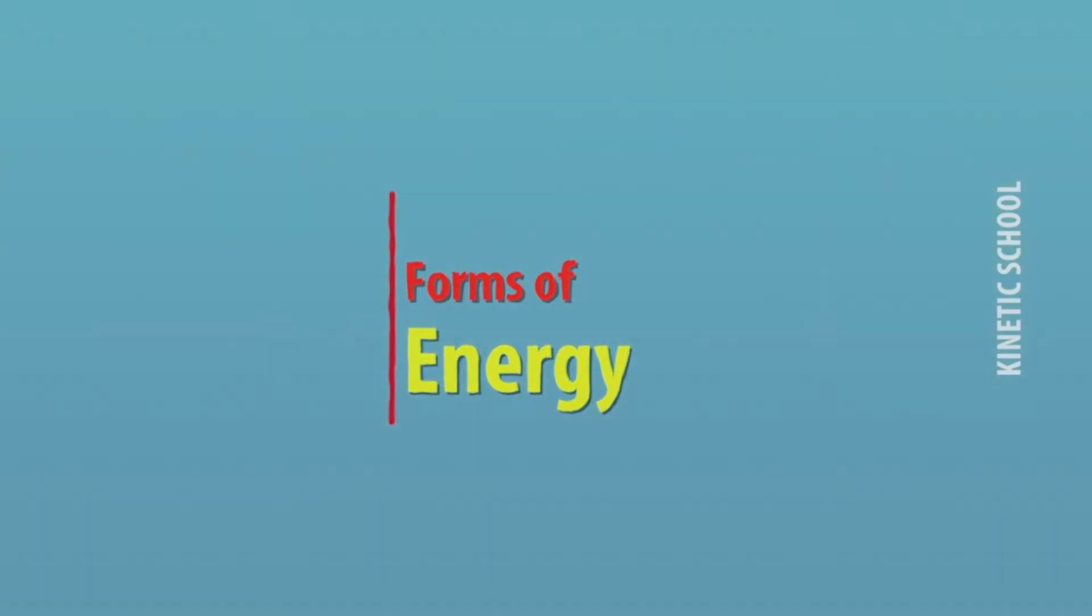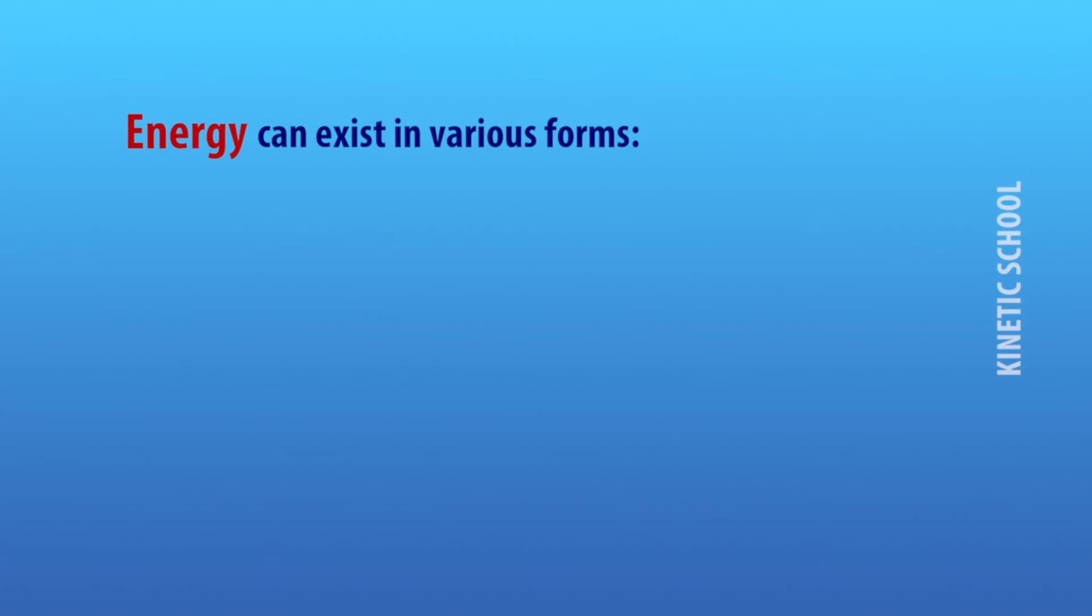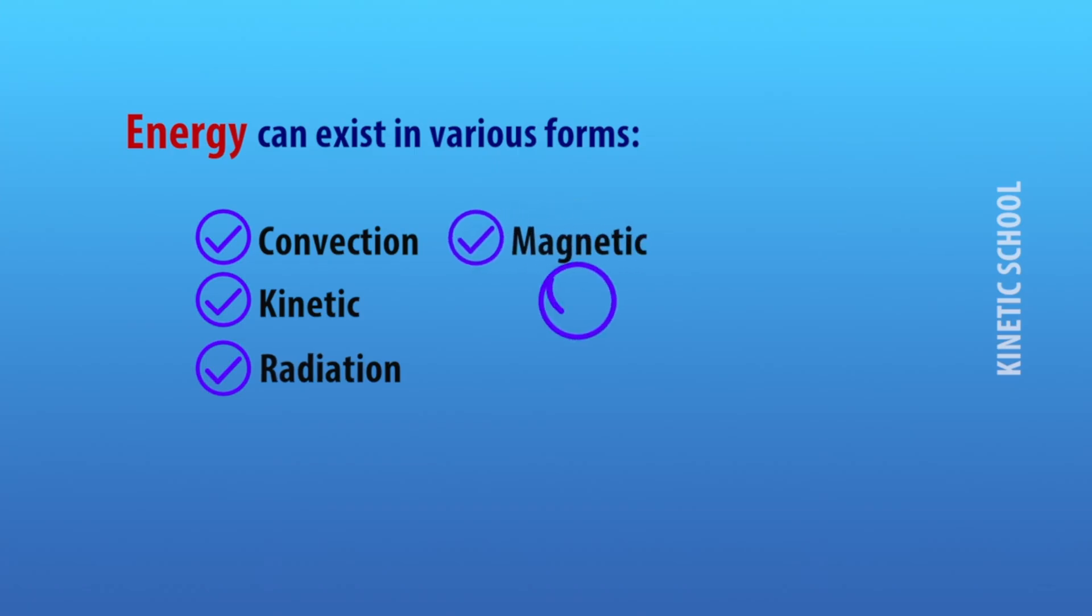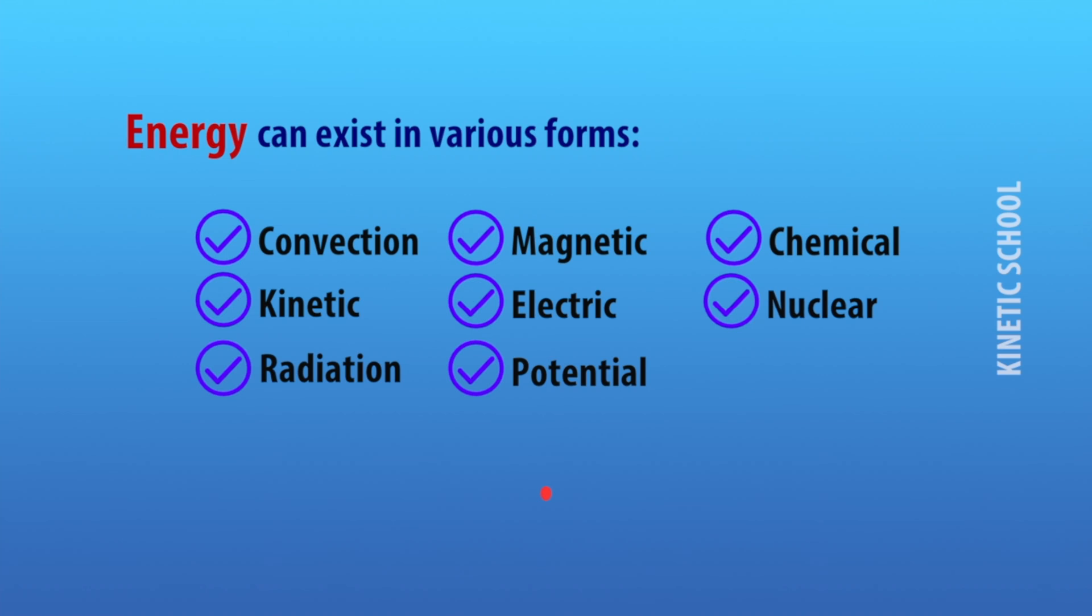Forms of Energy. Energy can exist in various forms such as convection, kinetic, radiation, magnetic, electric, potential, chemical and nuclear. And their sum constitutes the total energy of a system.